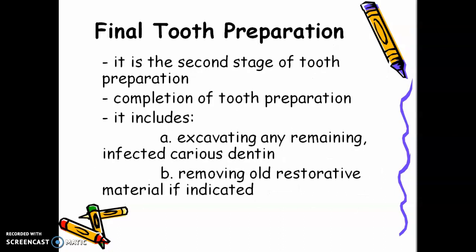In the final tooth preparation, completion of tooth preparation includes excavating any remaining infected carious dentine. When you use your spoon excavator or any hand-cutting instrument, these instruments should be sharp — or else you will be putting too much pressure on the tooth and the carious dentin won't be removed because your instruments are not sharp. Your hand-cutting instrument should be able to cut tooth structure.